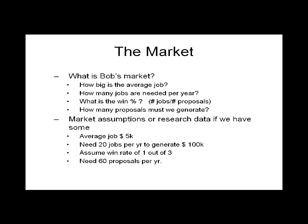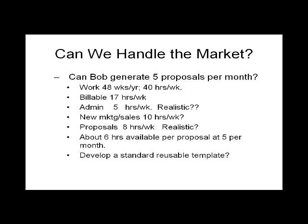Let's make some assumptions, or use research data from talking to customers or competitors — general knowledge of the industry, which is important. Make sure you know your industry before you go into it. Let's assume the average job is $5,000; therefore, we need 20 jobs a year. Are we going to win every job we bid on? I don't think so. Let's assume we win one out of three. Therefore, in order to get 20 jobs a year with a win rate of one out of three, we've got to generate 60 proposals per year.